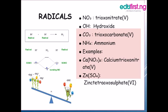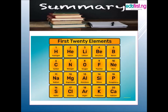In summary, we have the first 20 elements which include hydrogen, helium, lithium, beryllium, boron, carbon, nitrogen, oxygen, fluorine, neon, sodium, magnesium, aluminium, silicon, sulphur, chlorine, argon, potassium, and calcium. These are the first 20 elements.